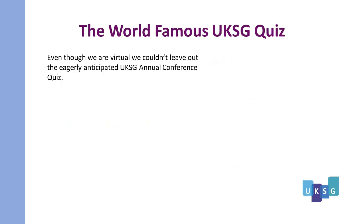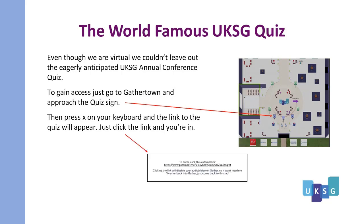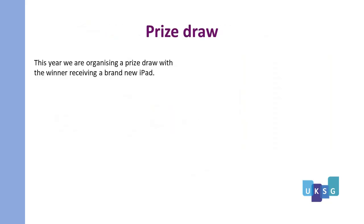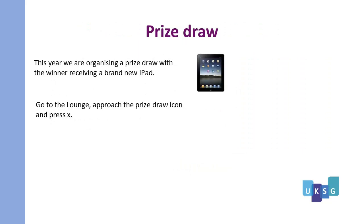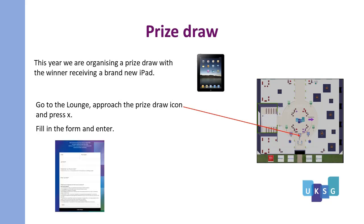Even though we're virtual, we couldn't leave out the eagerly anticipated UKSG annual conference quiz. To gain access, go to GatherTown, approach the quiz sign, press X on the keyboard, and the link to the quiz will appear — just click the link and you're in. This year we are also organising a prize draw with the winner receiving a brand new iPad. Go to the lounge, approach the prize draw icon, press X, fill in the form and enter. You are allowed one entry per person for each day of UKSG 2021.